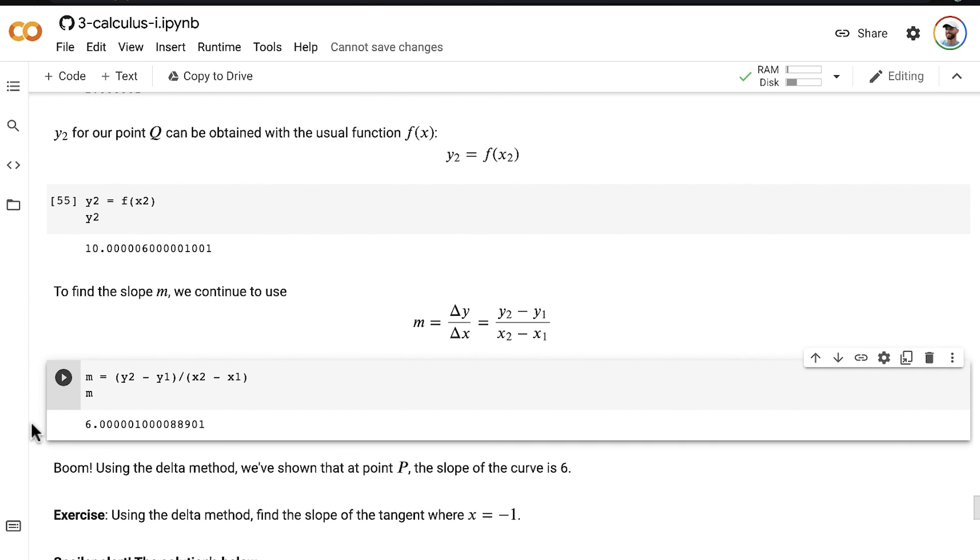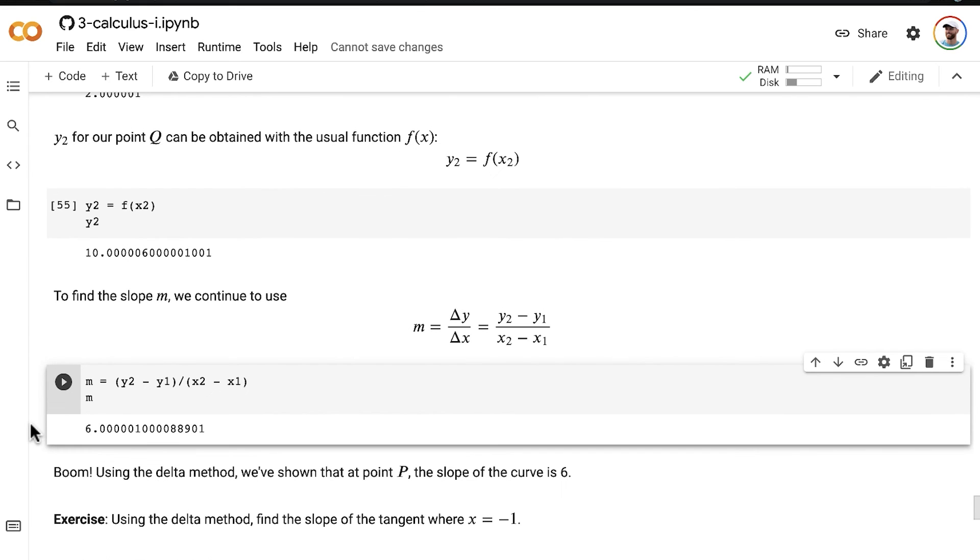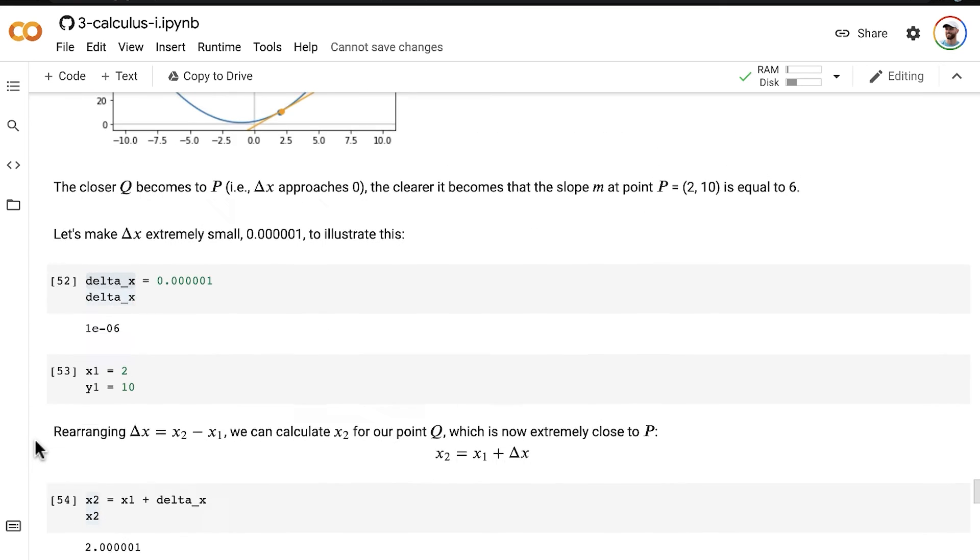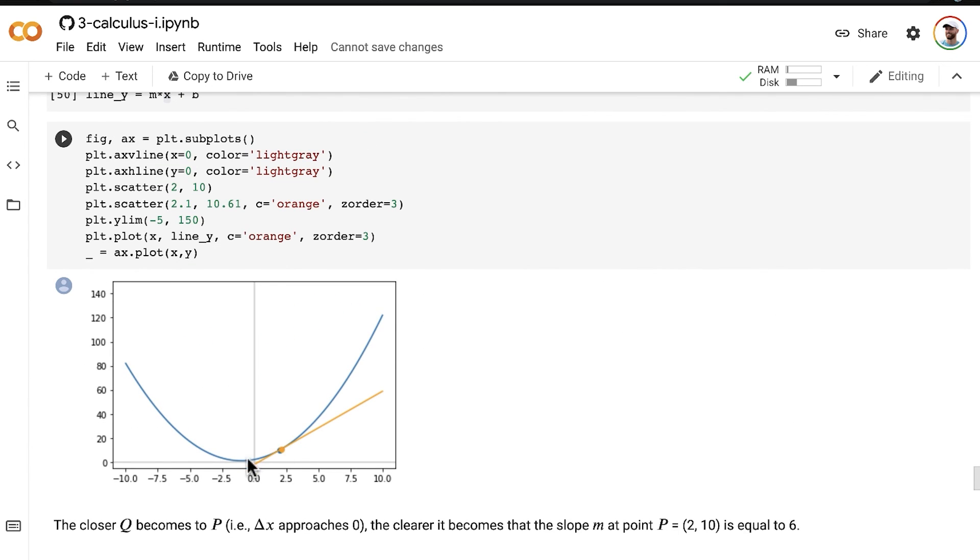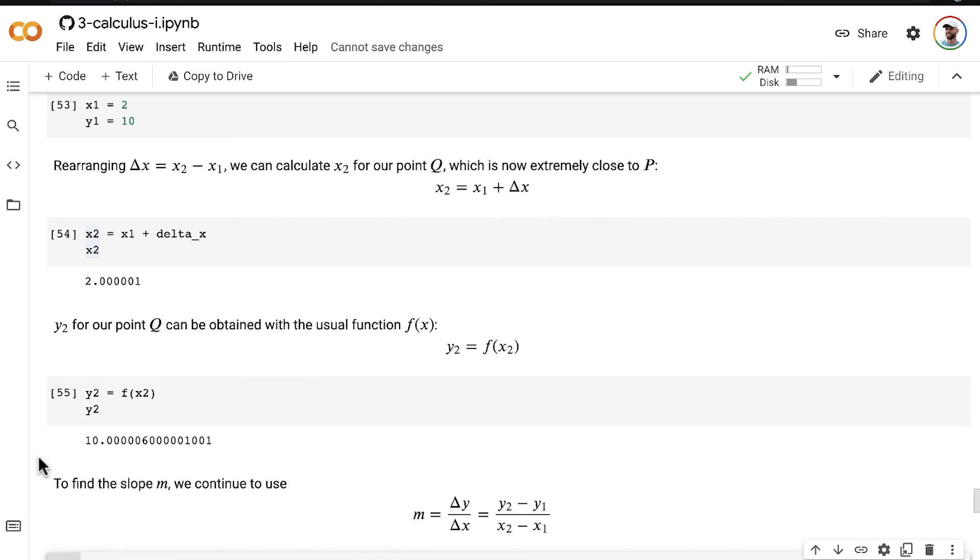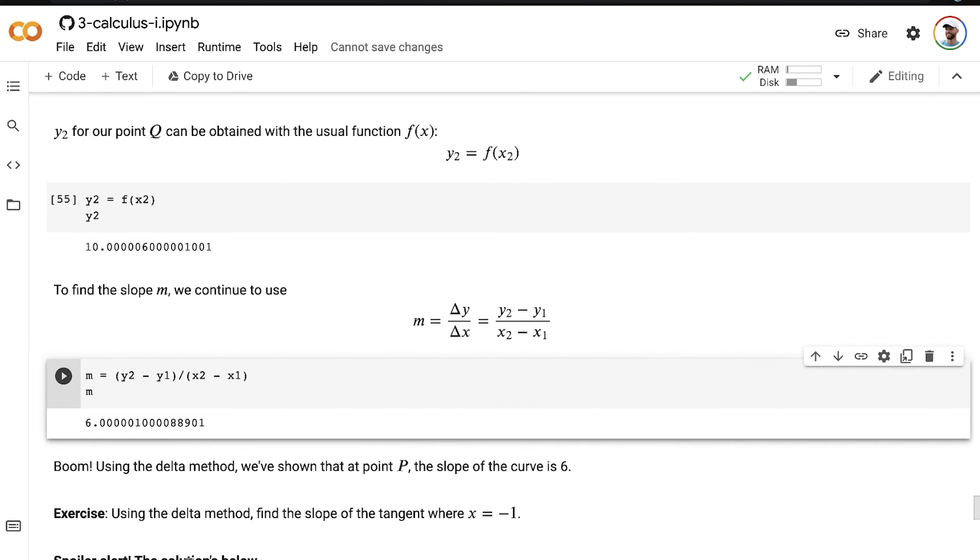So I recommend now as an exercise that you pause the video and use the same delta method approach that we have been using so far in this notebook to find the slope of the tangent on the same curve that we've been working with where x is equal to negative 1. So we've been finding it where x is equal to 2, but you can use the code that we've been using to find the slope of the tangent where x is equal to 2. Do that now where x is equal to negative 1. And don't scroll down in the notebook because the solution is below.